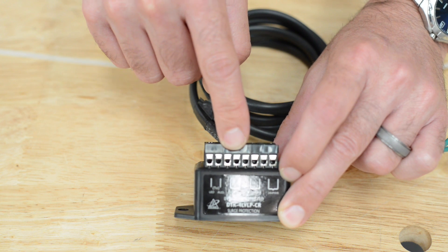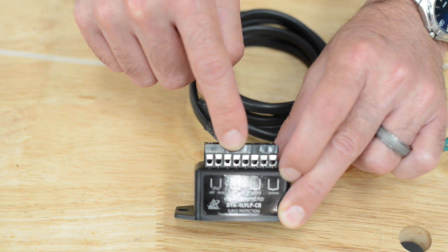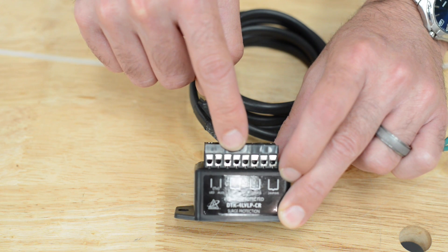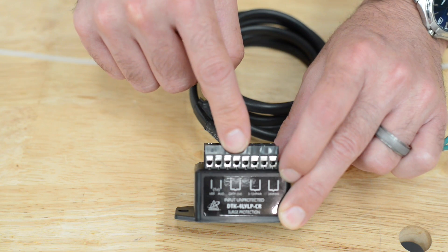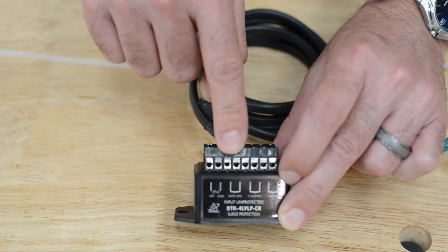So for example, let's say you have a push button and two keypads all wired to the same two terminals on the gate opener. You would feed the two relay wires from all three of those devices into these two terminals.